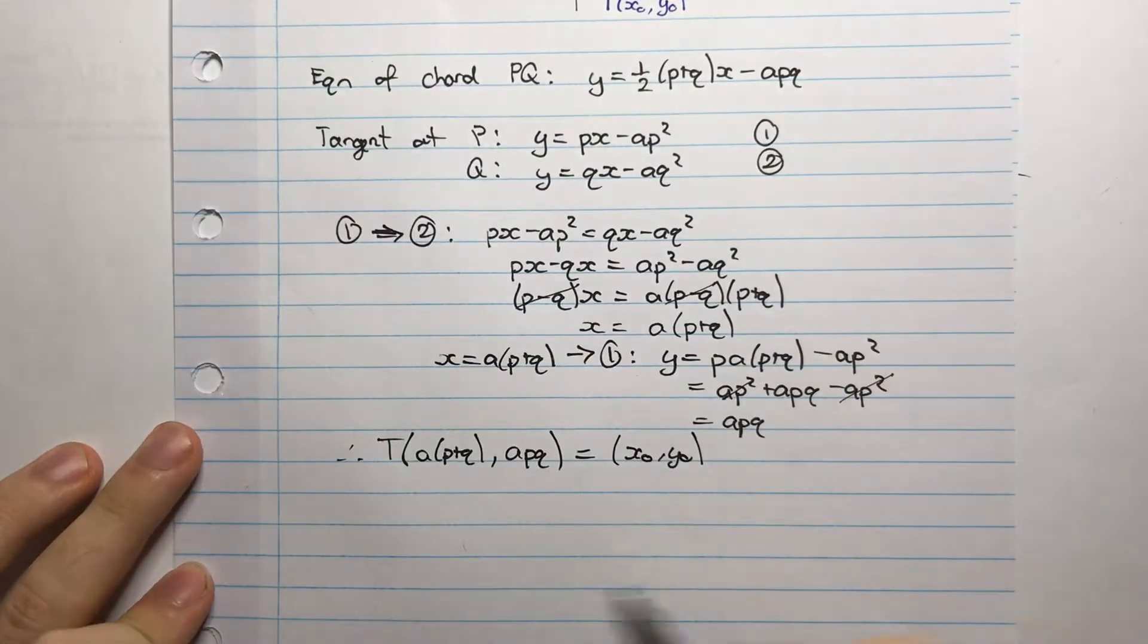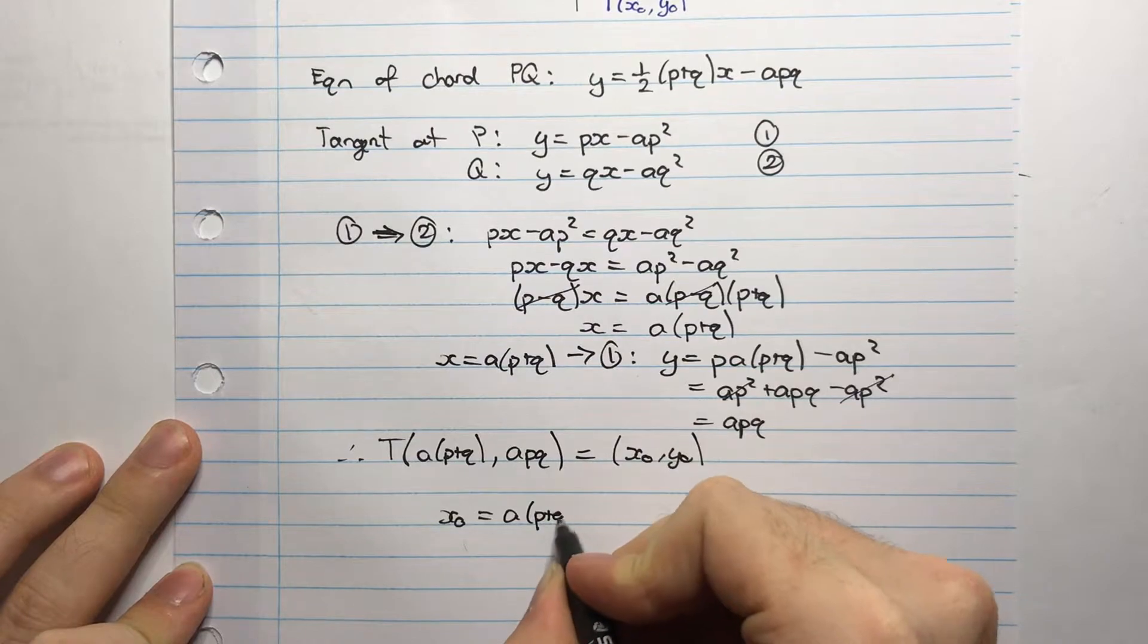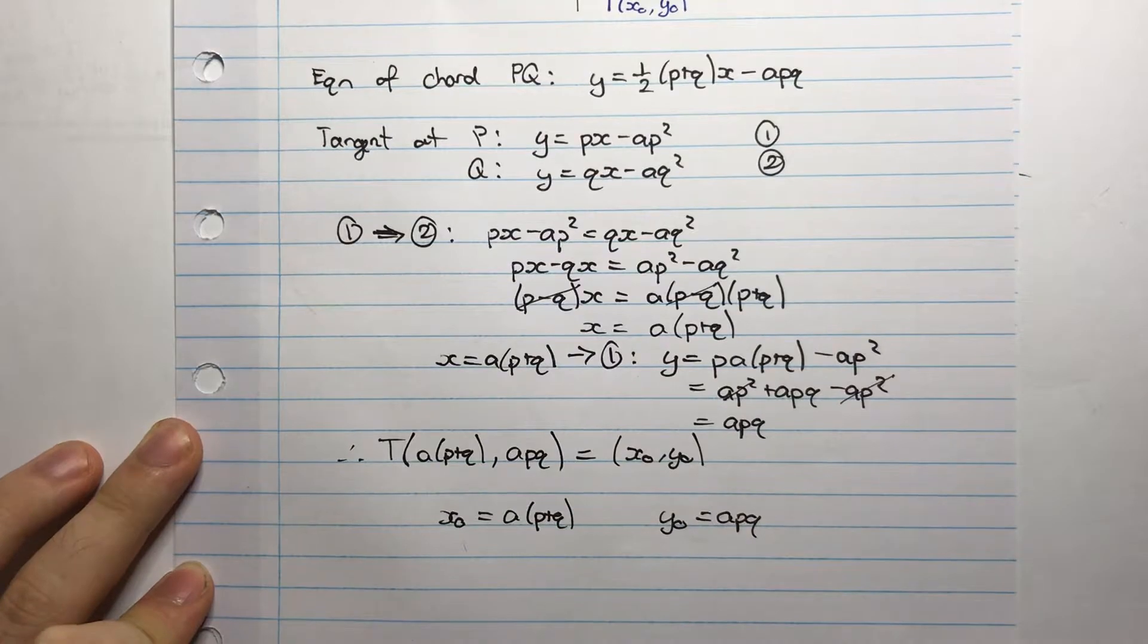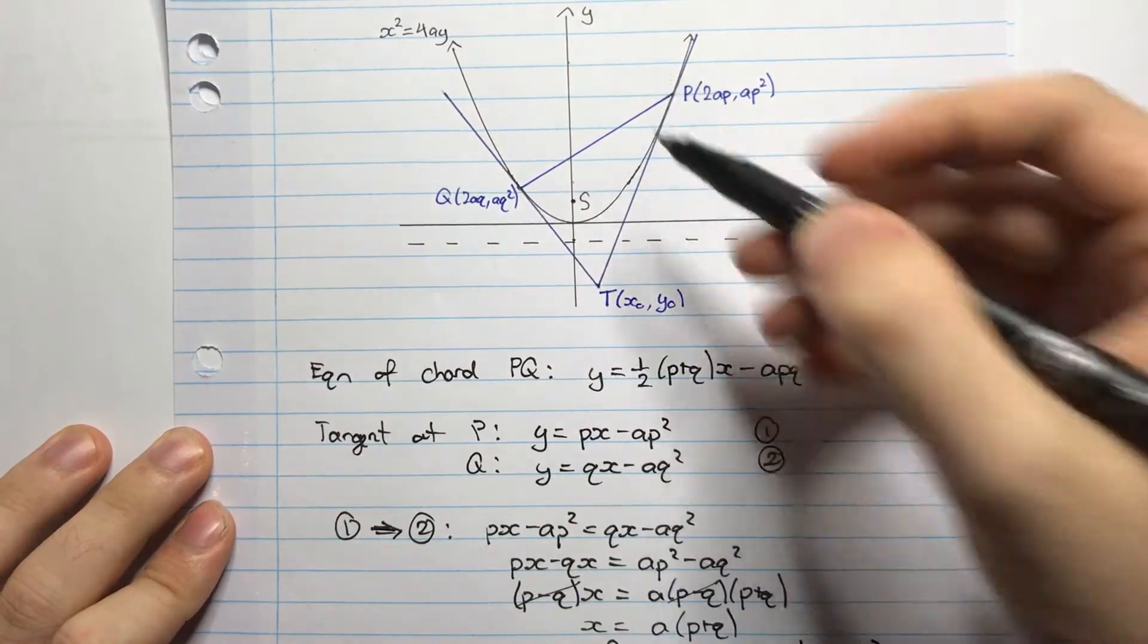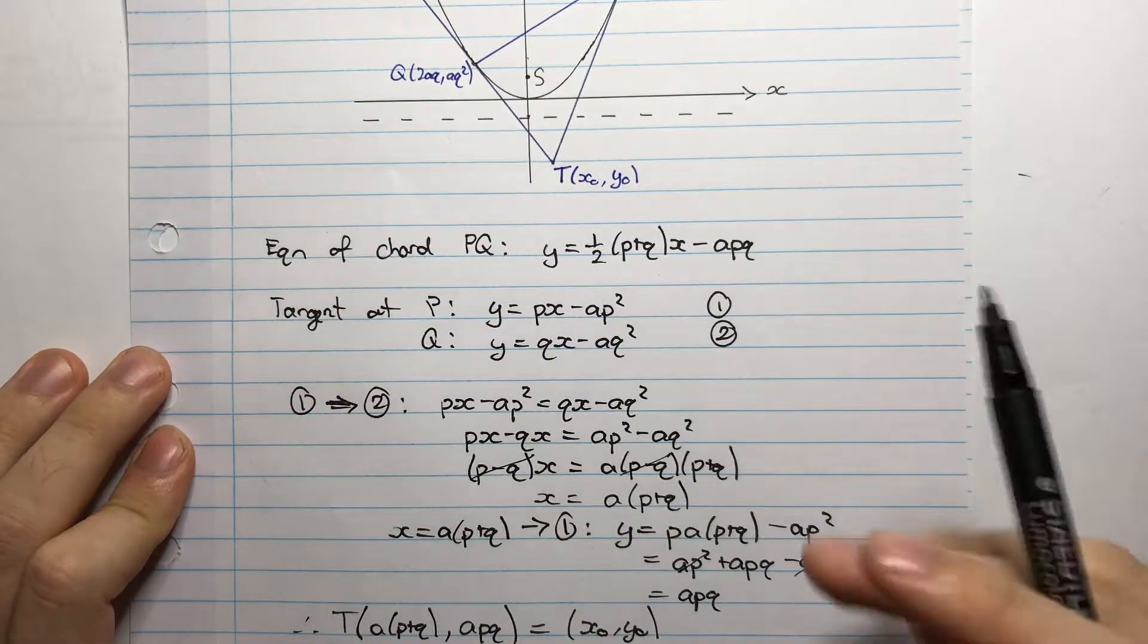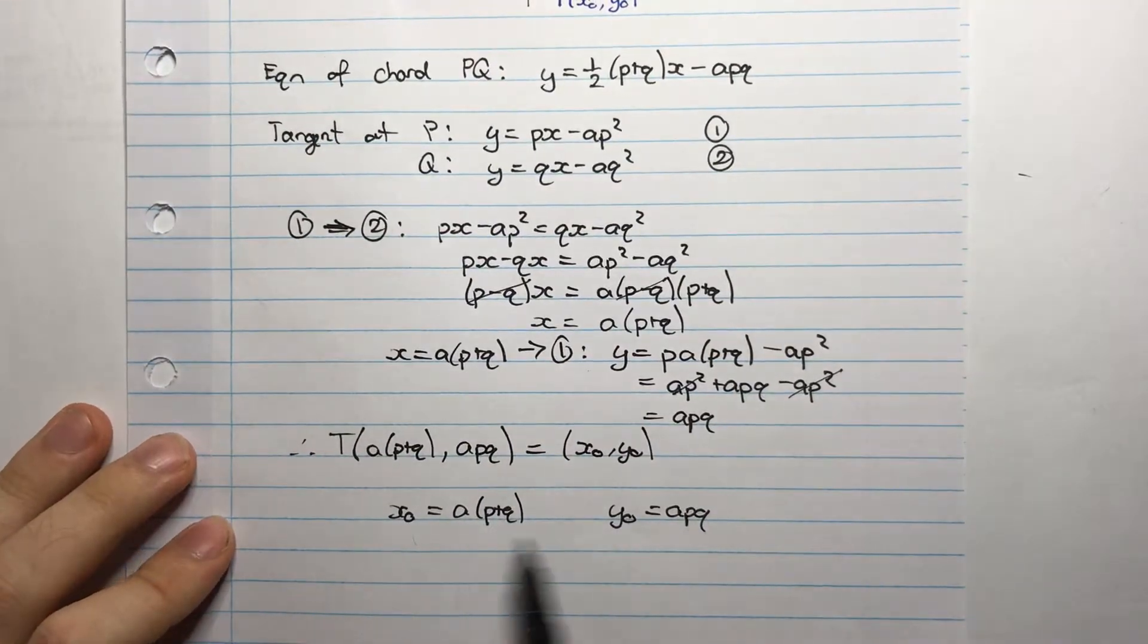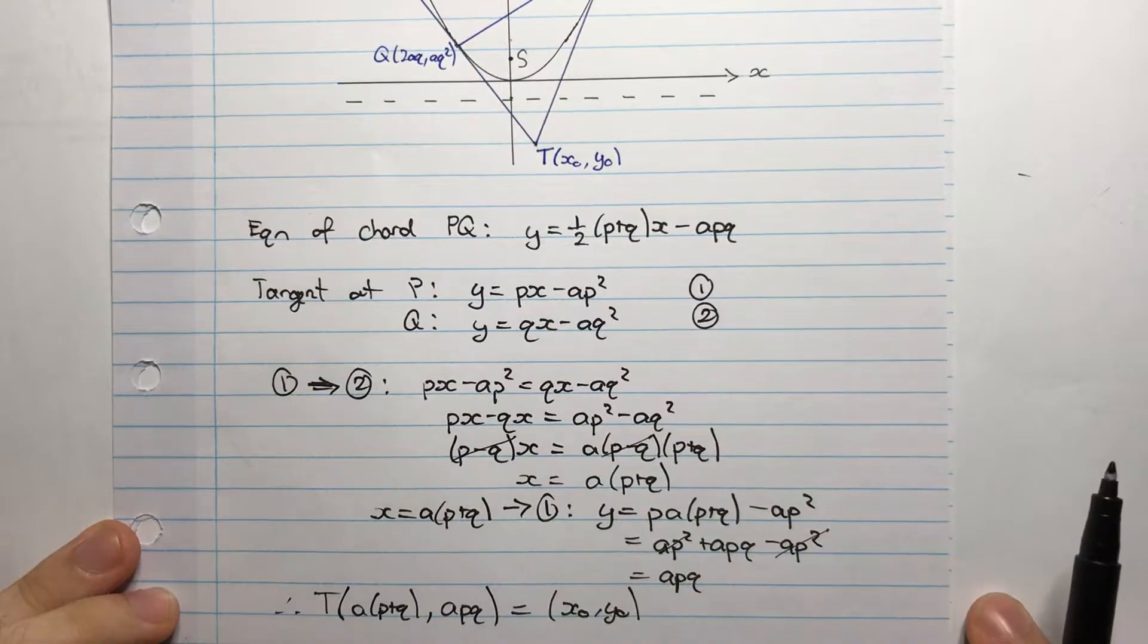So once again, what am I trying to find? I'm trying to find the equation of this chord defined by this point T. Now I have the equation of the chord PQ when it's not defined by the point T, just any equation of a chord PQ. So this is the condition where it's defined by the point T. So I'm going to use these and substitute these back into the equation of the chord here.